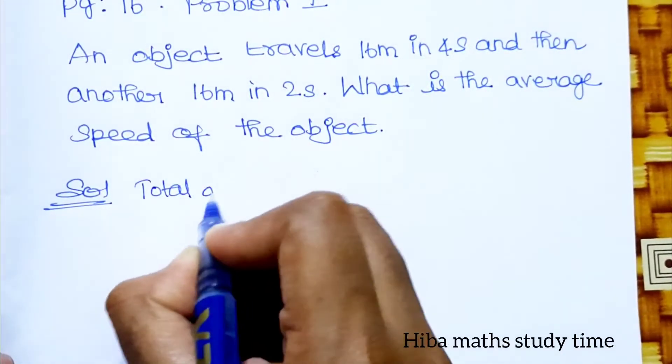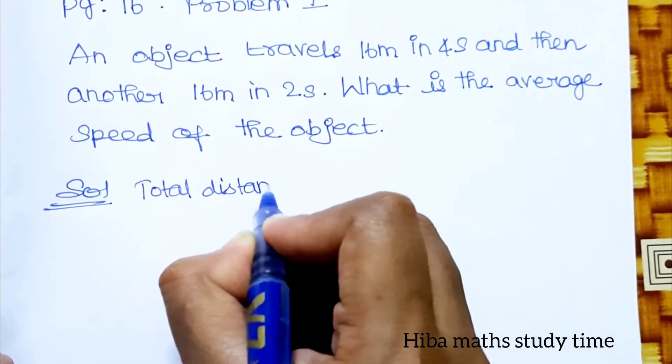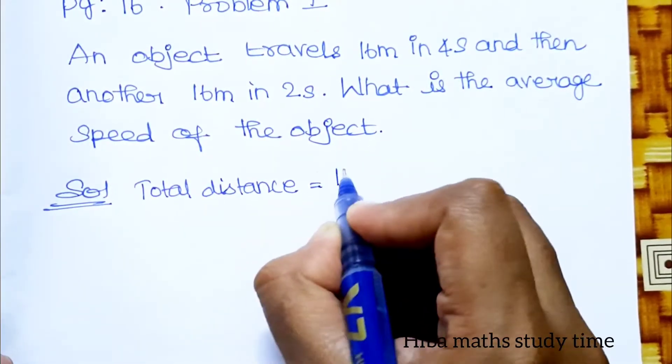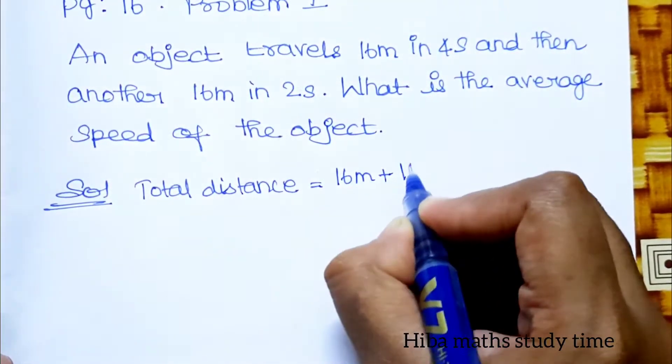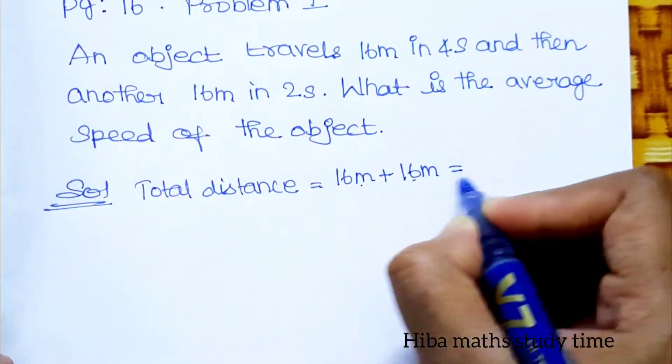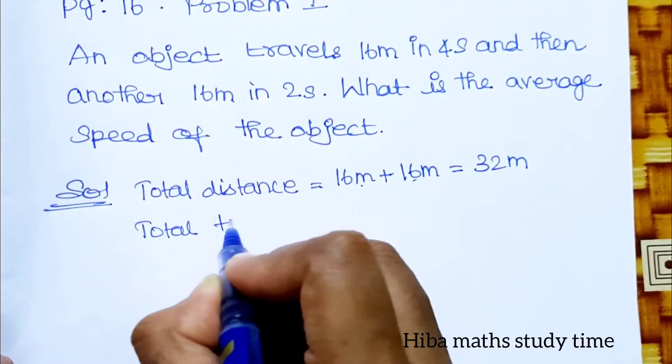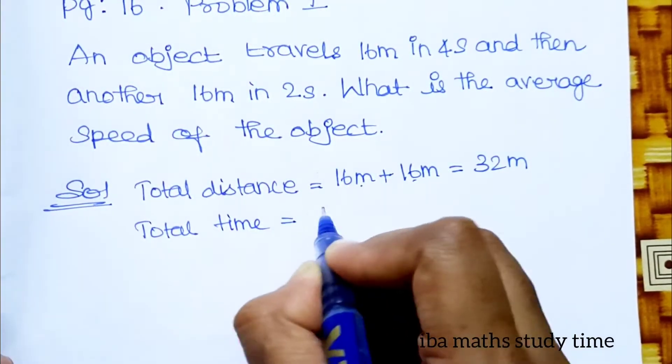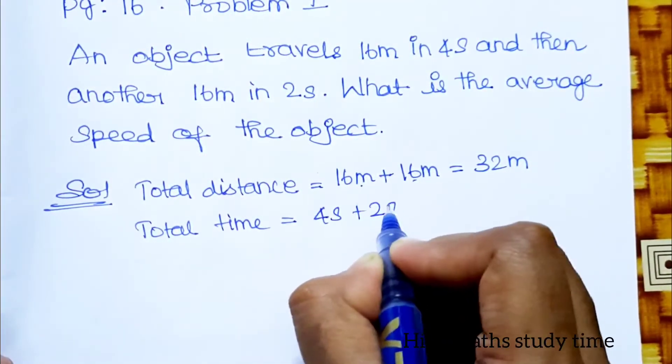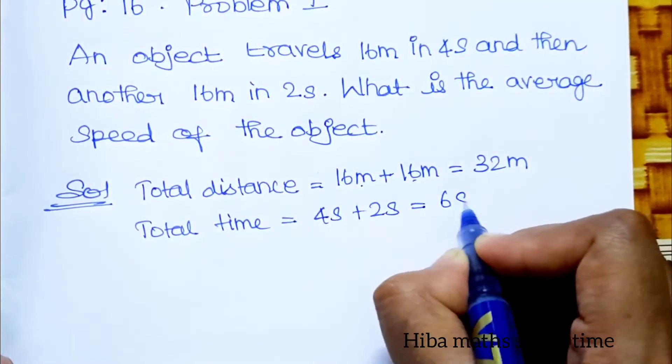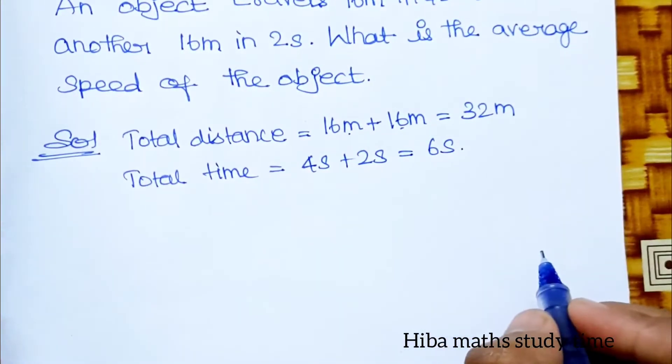Solution: Total distance - first distance is 16 meter and the second is 16 meter, so we have to add them. 16 plus 16 is 32 meter. Total time - we have to add 4 seconds and 2 seconds, which is 6 seconds.